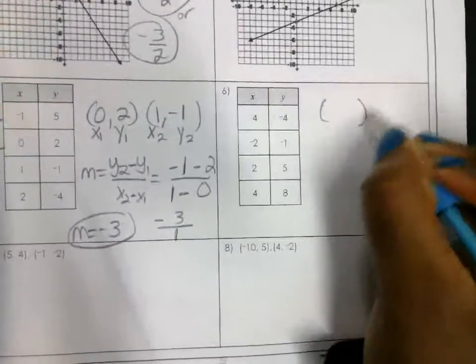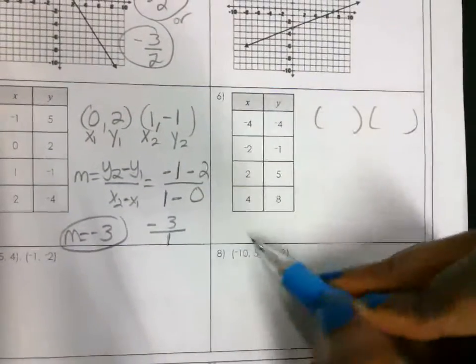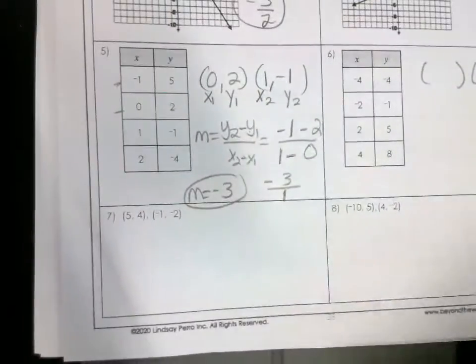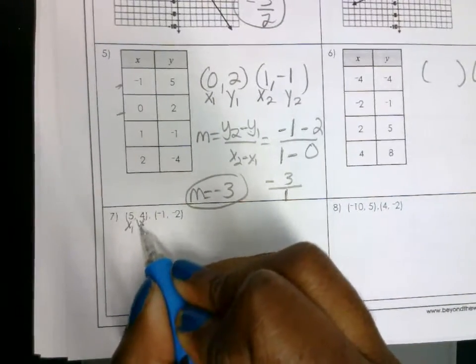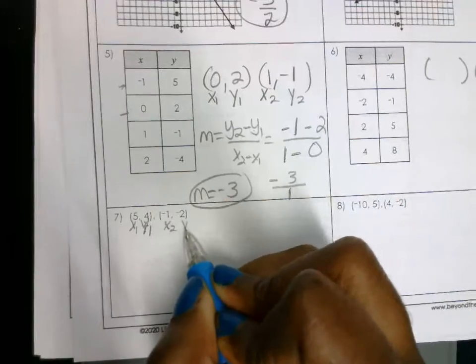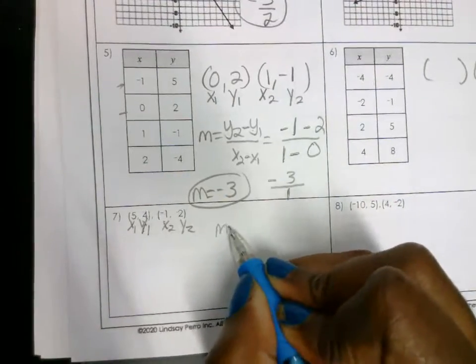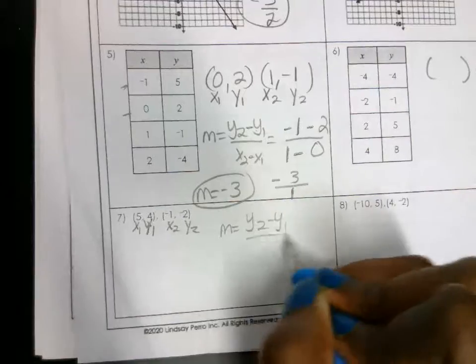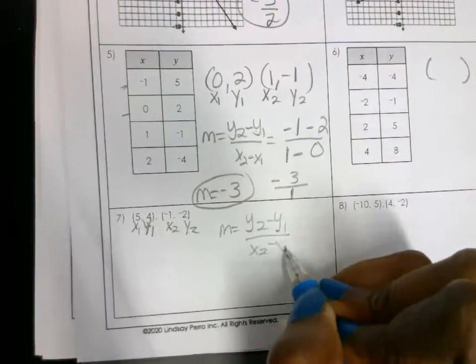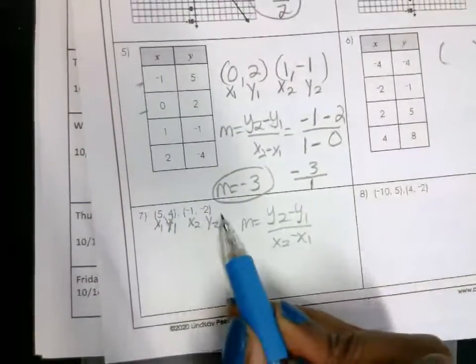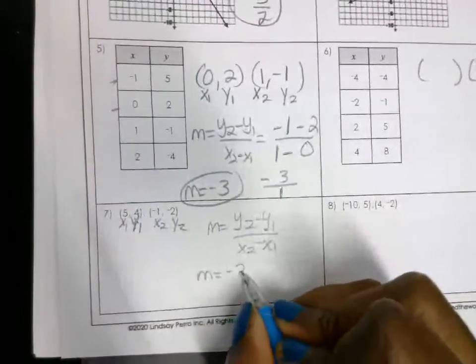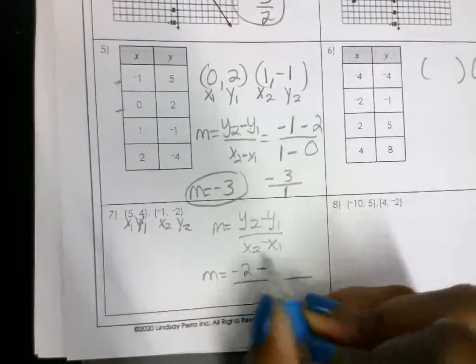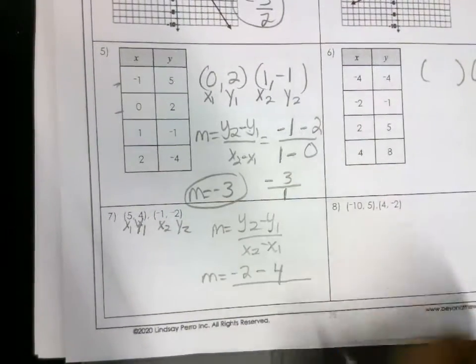Again, you pick two points. It doesn't matter what two points when you're given a table. Just pick any two points, and you do the same process again that I did here. For this bottom one, again, label x1, y1, x2, y2. You use the formula for slope, y2 minus y1 over x2 minus x1. And you substitute these numbers into the formula. So here, negative 2 on the top, minus is a part of the formula, 4, okay? x2 on the bottom is negative 1. Minus is a part of the formula, 5.